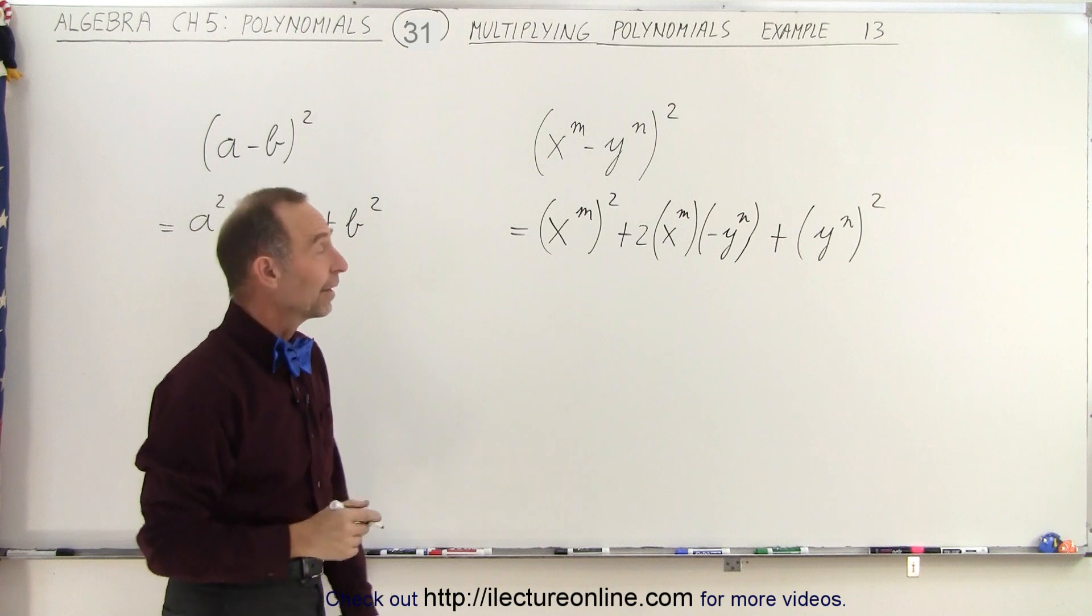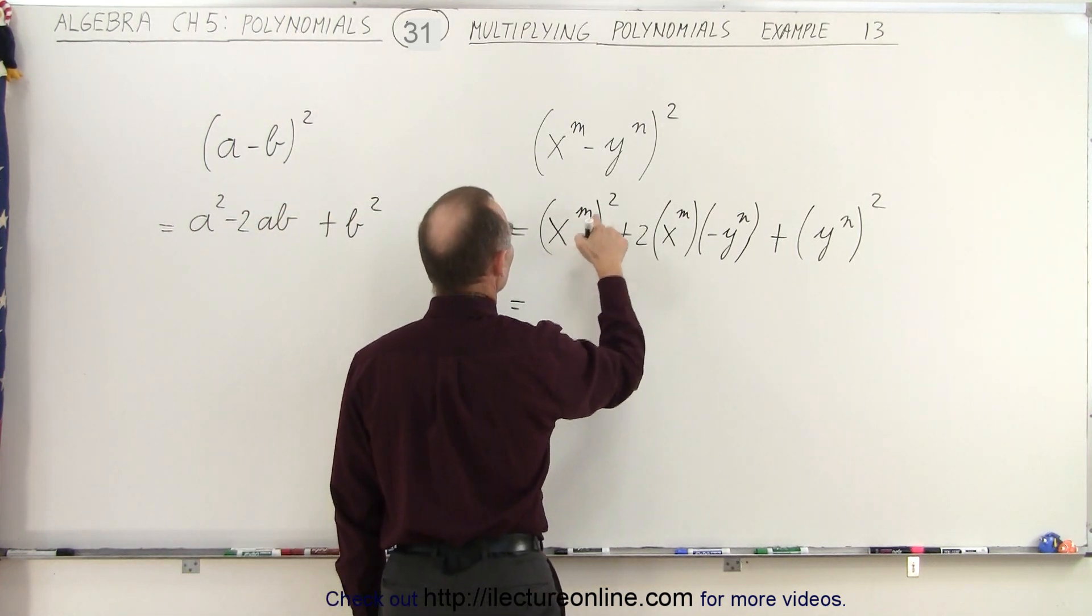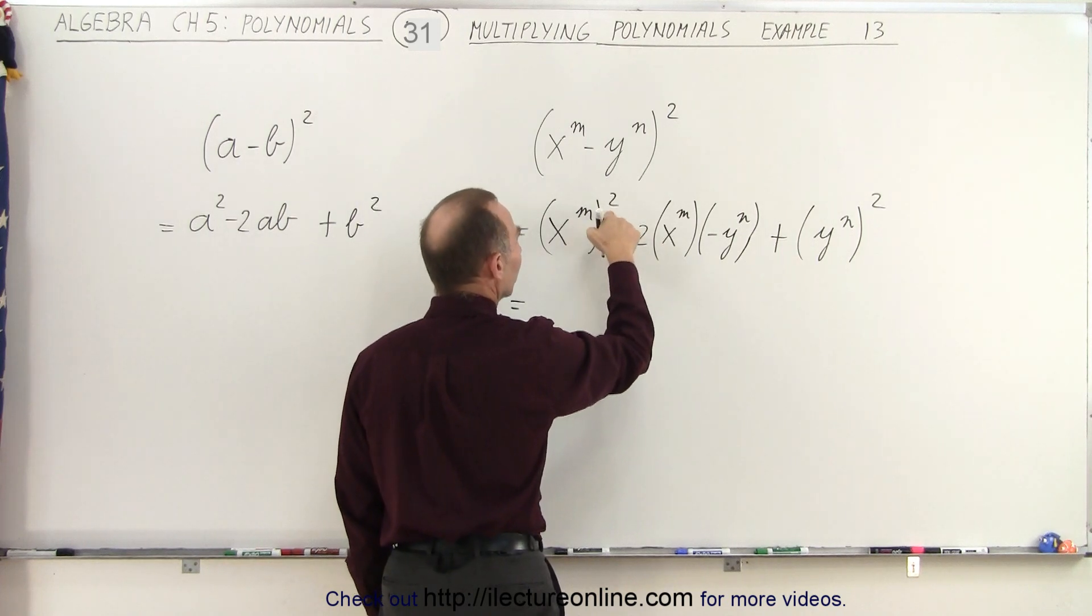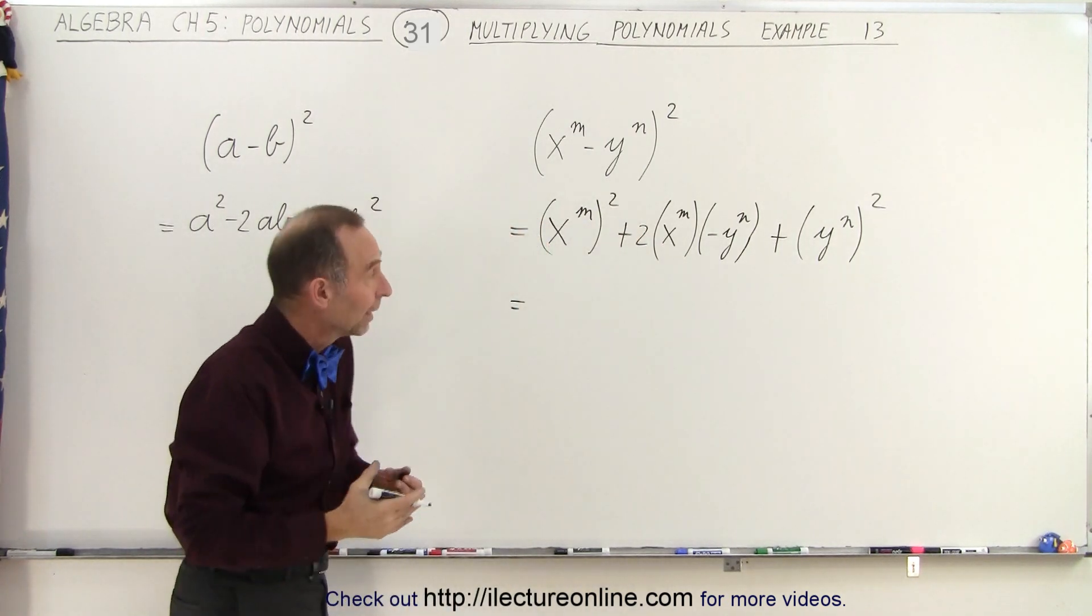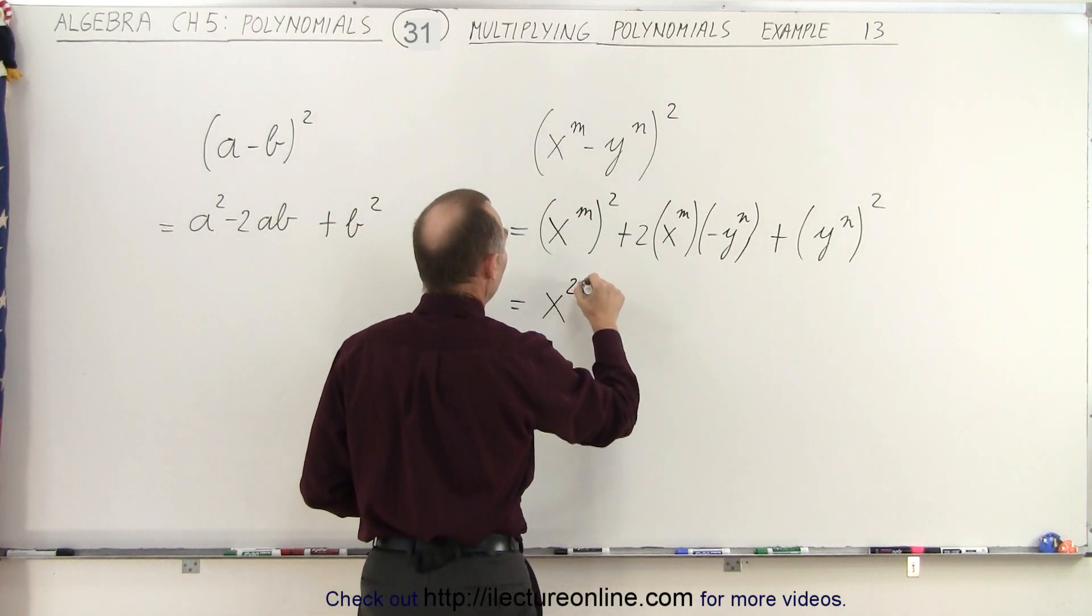Let's simplify that now and see what we get. So this would be equal to X to the M squared. Notice we have an exponent raised to exponent. The rule tells us that we have to multiply the exponent, so this becomes X to the 2M.